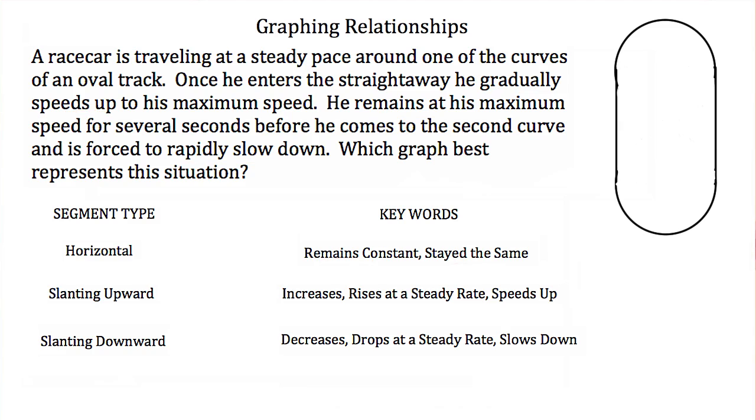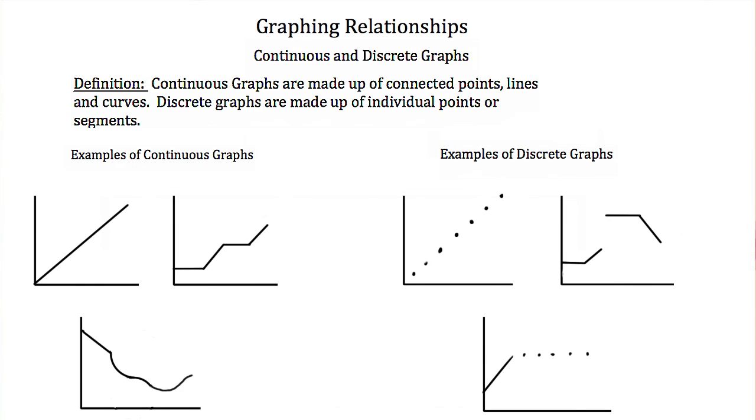Now there are two major types of graphs. There are discrete and continuous graphs. Continuous graphs are made up of connected points, lines, and curves. While discrete graphs are made up of individual points or segments.